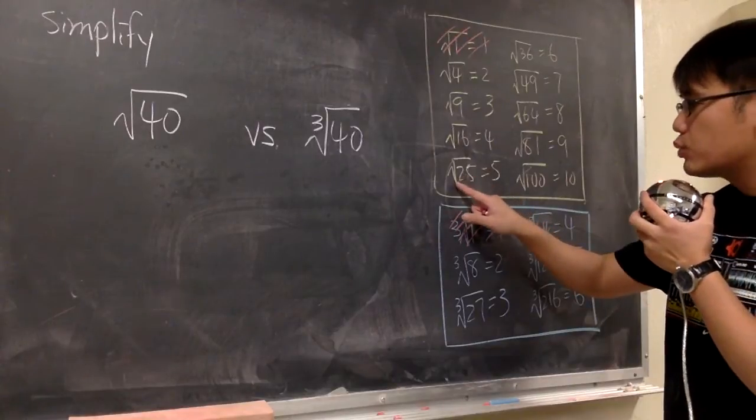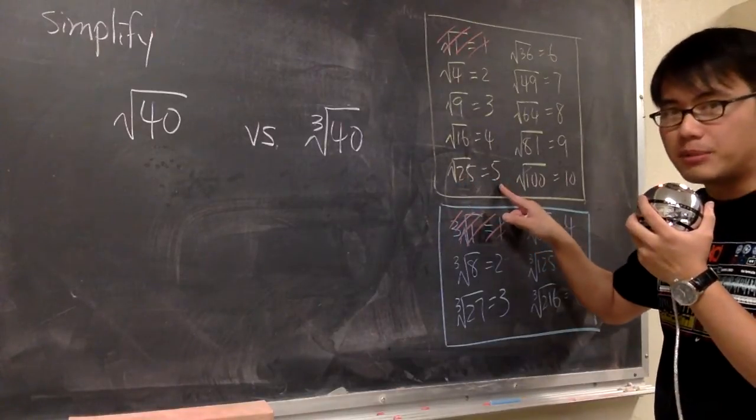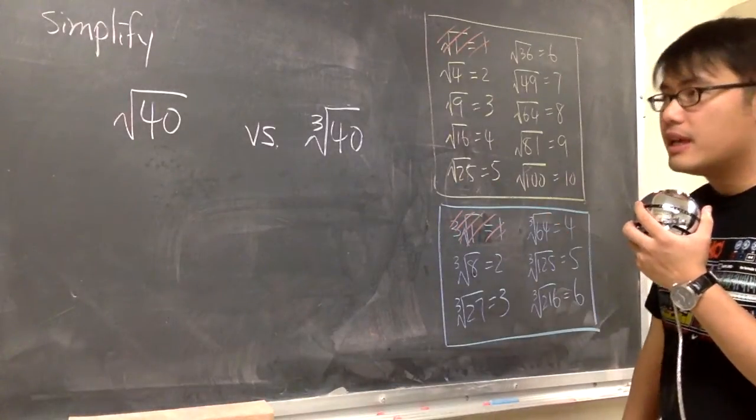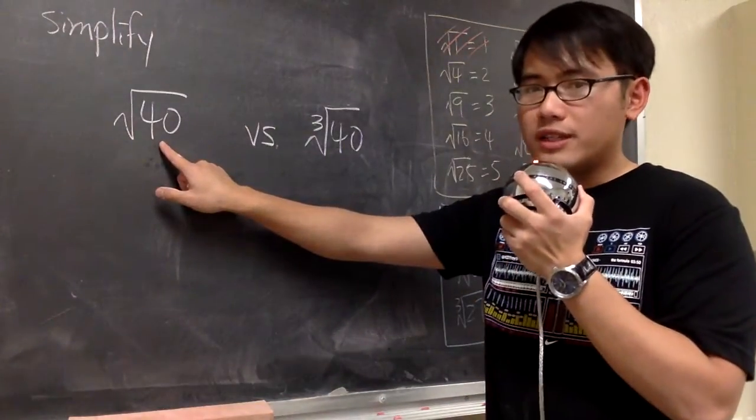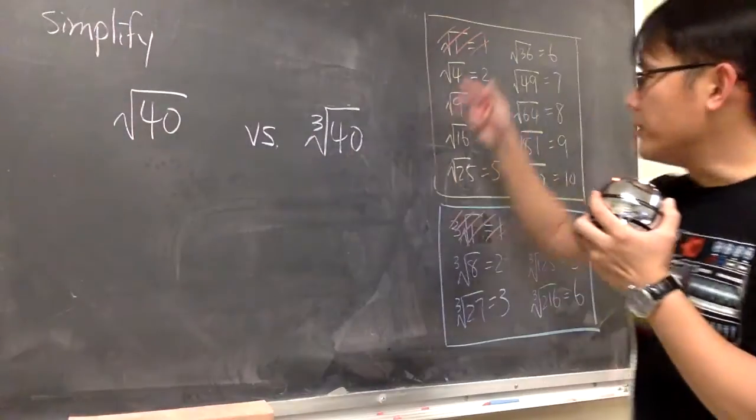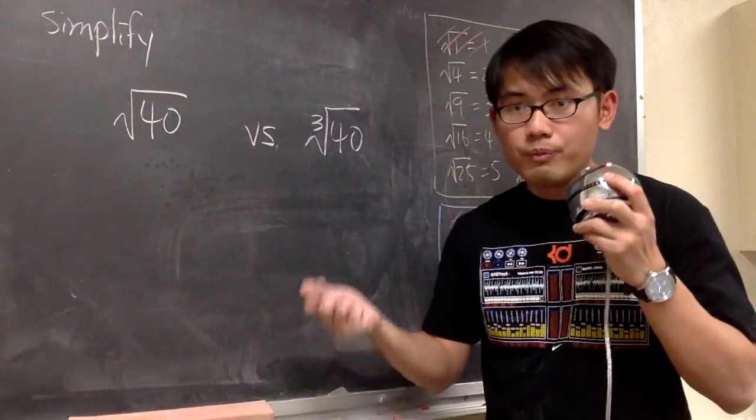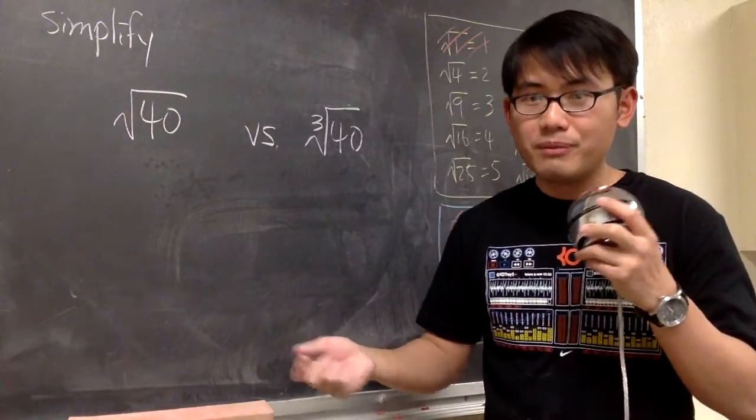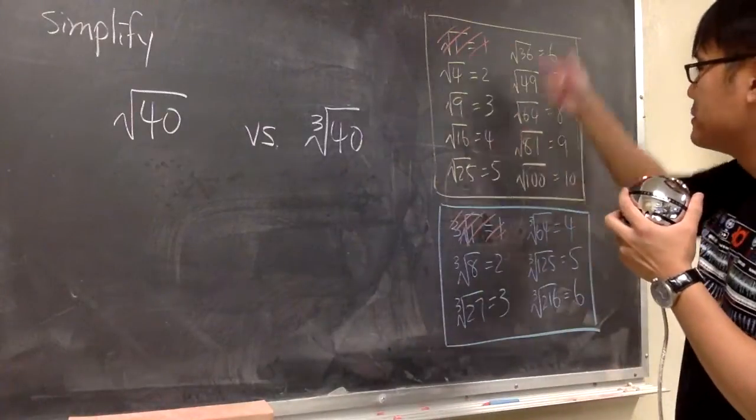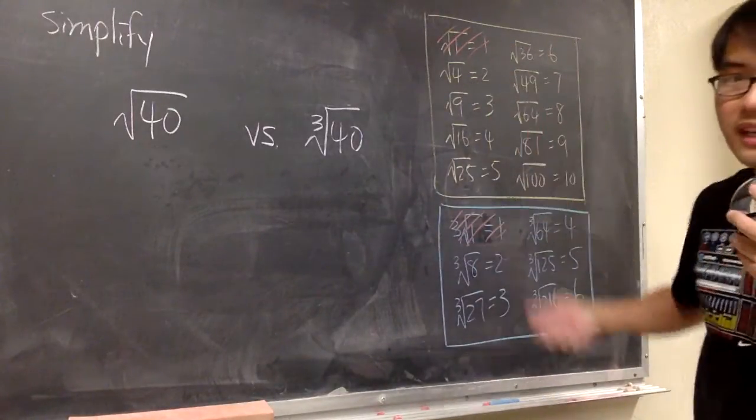Such as square root of 25 will give us a nice number 5. So we ask ourselves, what times what will give us 40? And one of the numbers should be from here. And even though 2 times 20 is equal to 40, 2 is not here, 20 is not here, because they are not perfect squares.